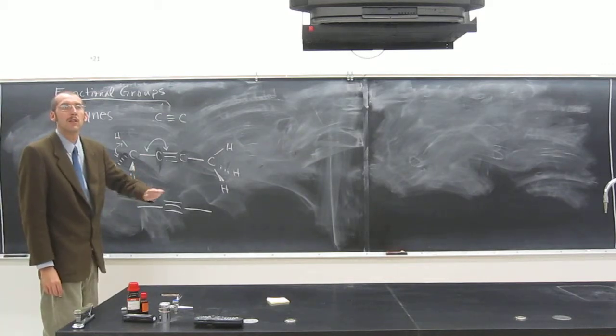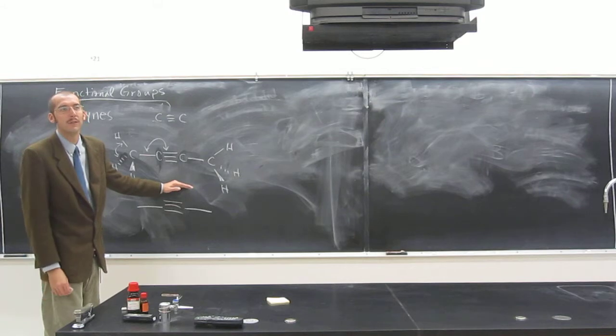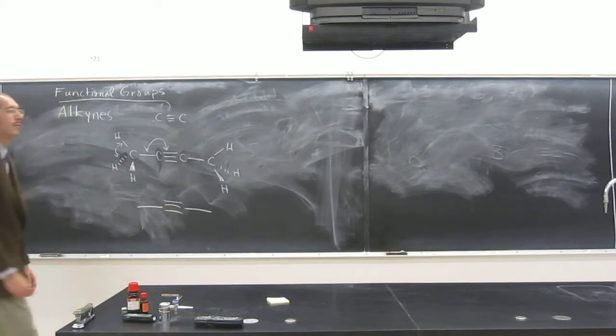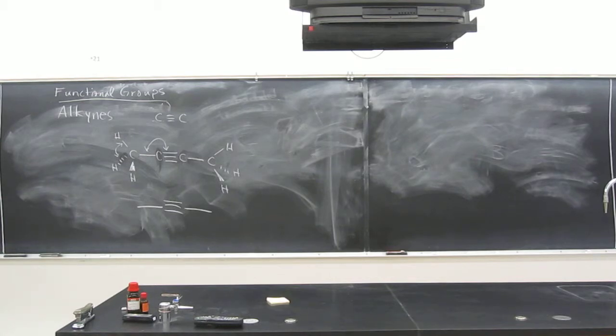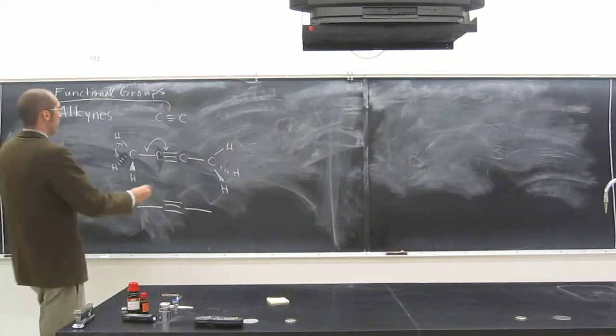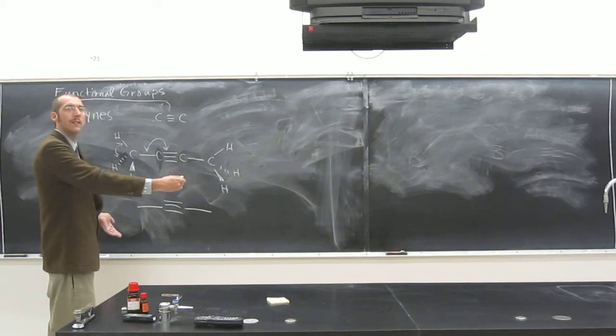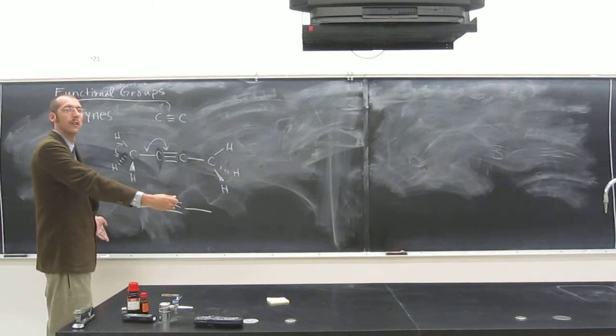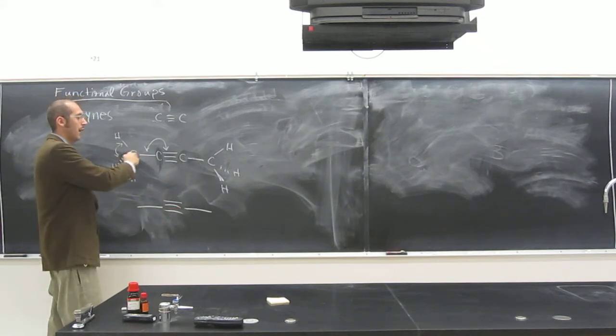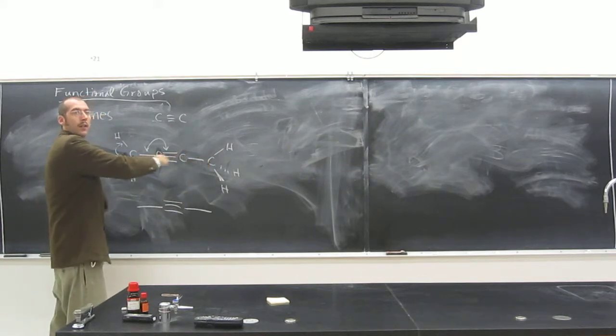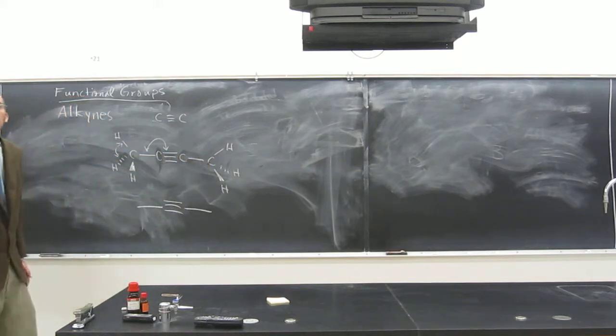Alkynes can be terminal or internal. Remember, the similarities to the alkene should be obvious. So if you've got this one here, is this terminal or internal? Internal. Why? Because you've got two carbons on either side of the carbon-carbon triple bond.